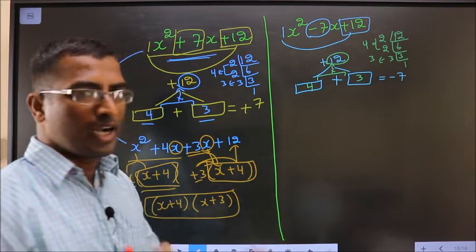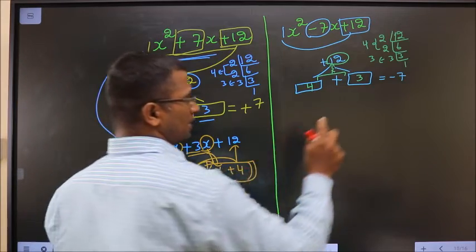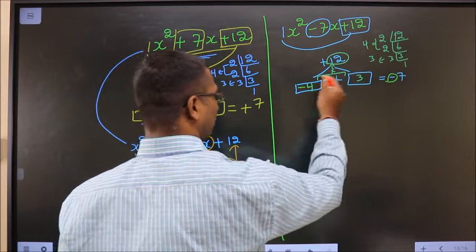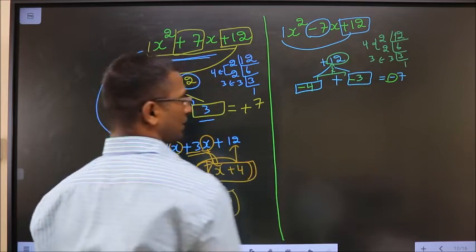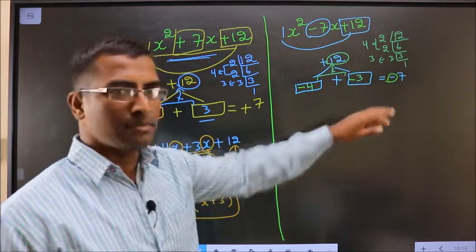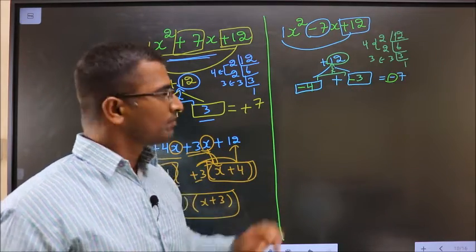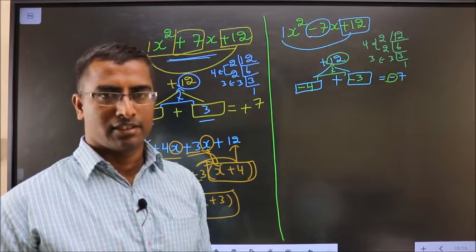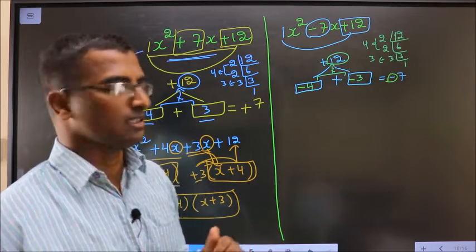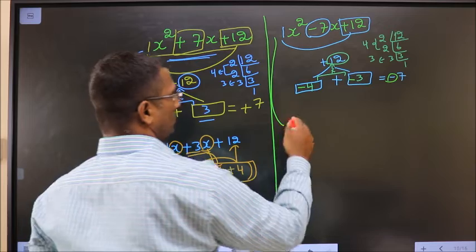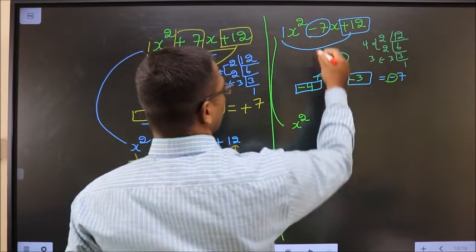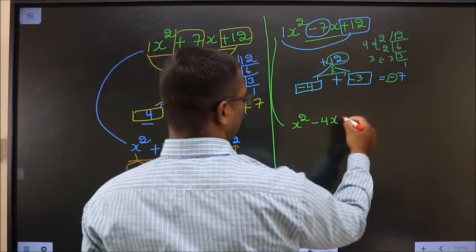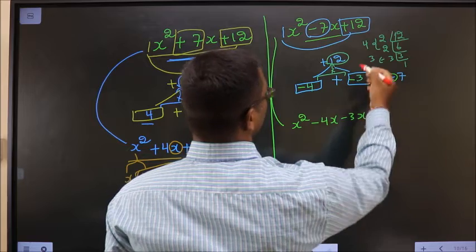Now adjust the signs. I should get minus 7 here. That could only happen if I place minus before 4 and also minus before 3. Minus 4 minus 3 is minus 7, and minus 4 into minus 3 is plus 12. So we have adjusted the signs. Now x squared as it is; in place of minus 7x I will write minus 4x and minus 3x, plus 12.